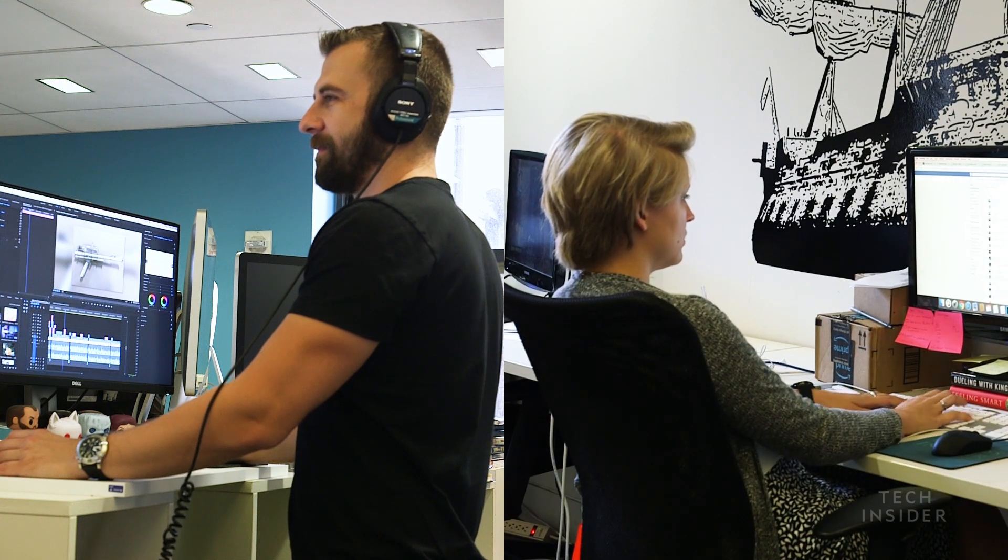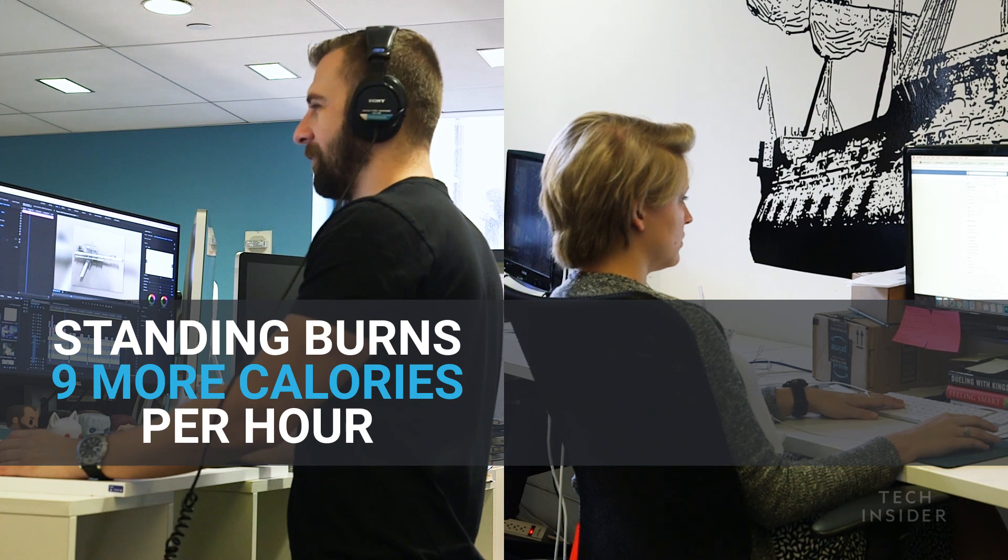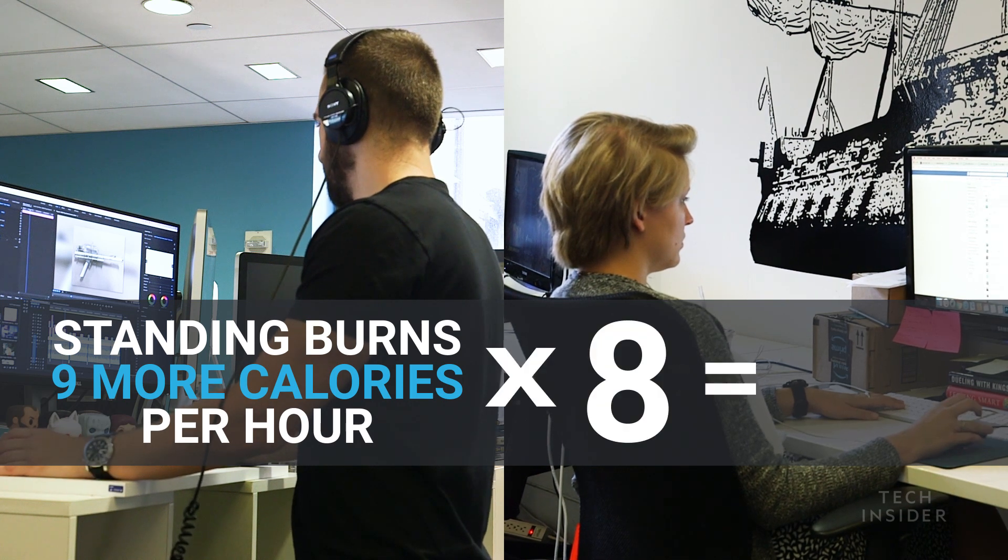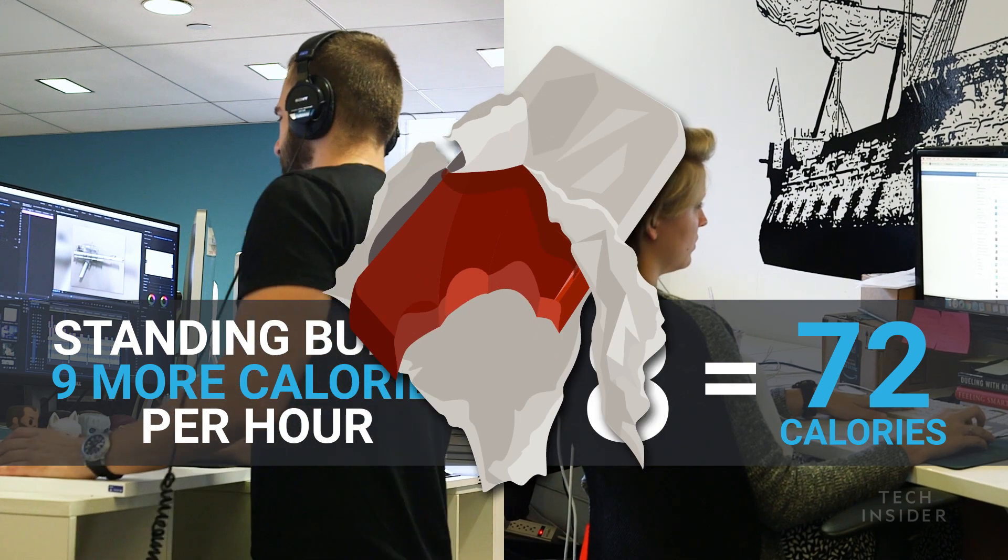One of the differences between standing and sitting is that standing burns a few more calories. One study showed that it was about nine more calories per hour. Multiply that by an eight-hour day, that's about 72 calories, or a quarter of a candy bar, which is not very much.